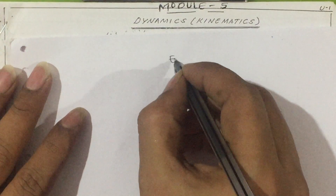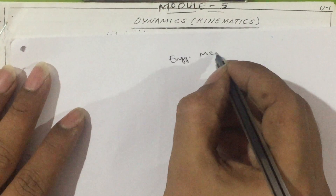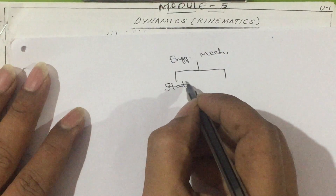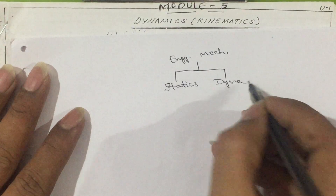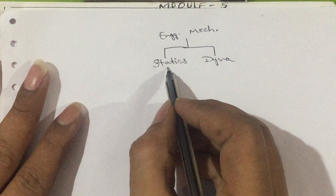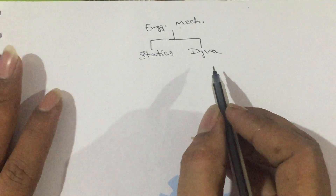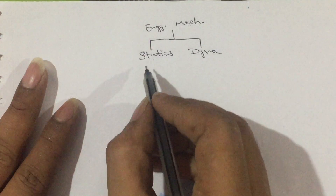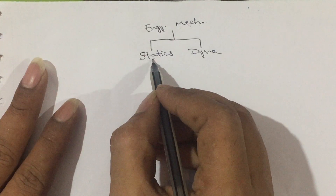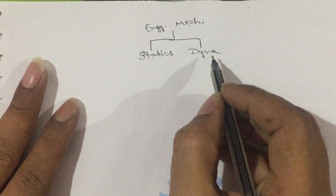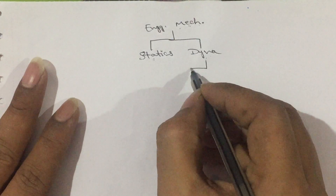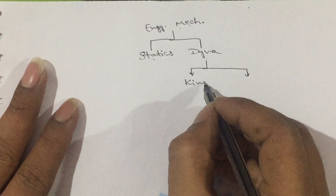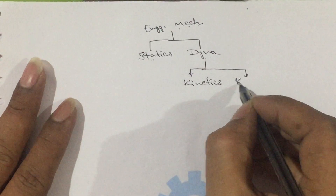We know that engineering mechanics is classified into statics and dynamics. Engineering mechanics deals with the bodies — the state of the body, whether it may be at rest or in motion. Statics is the study of bodies which are at rest; dynamics is the study of bodies which are in motion. Dynamics is again further classified into two types: one is kinetics, another one is kinematics.